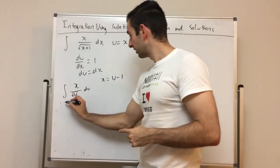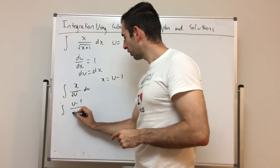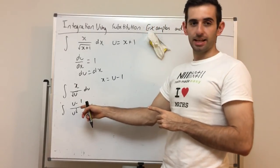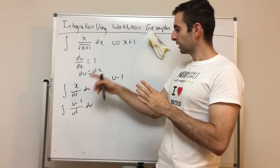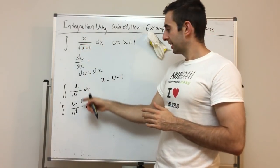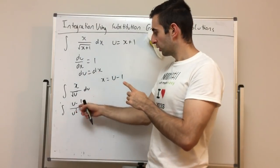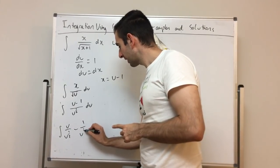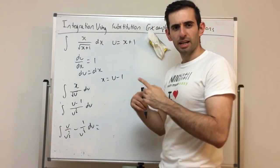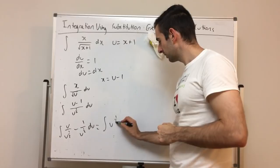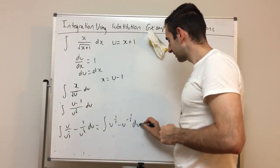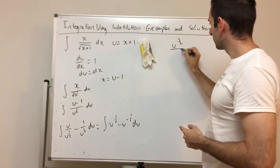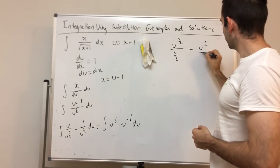Now everything is in terms of u: (u − 1) / u^(1/2). To integrate this, I'll write the square root as u to the power of a half. The denominator has only one term, so I can split the fraction: u / u^(1/2) minus 1 / u^(1/2). Collecting powers gives: u^(1/2) minus u^(−1/2). Now I can integrate term by term — add one to each power and divide by the new power.